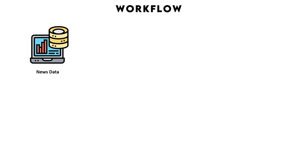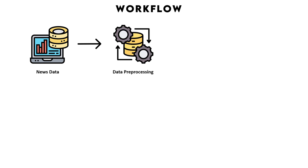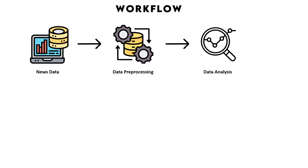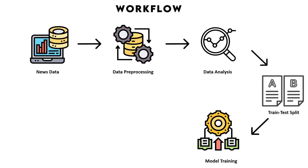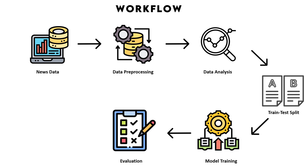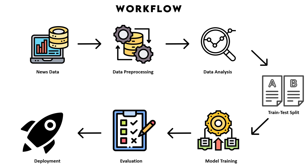Let's see what's going to be the workflow for our project. We will start by importing the news dataset which will contain the fake and the true news. After this we will do some data pre-processing in which we will be handling missing values, removing irrelevant features, and also performing data cleaning on our text. After data pre-processing we will do data analysis on our textual data, and then divide our data into the training and testing set with the help of train-test split. After this we will train our model with logistic regression, and evaluate it with metrics like the classification report where we will get accuracy and precision. After evaluation we will deploy our model with Streamlit so that other users can use it online. Now let's jump into the coding part.